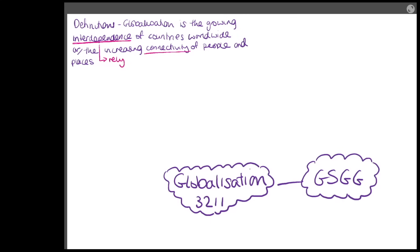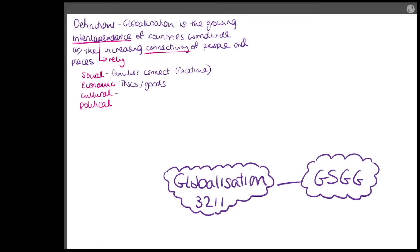When we think about globalisation, there are many strands: social, economic, cultural, and political. Social would be families connecting instantly, for example over FaceTime. Economic is our transnational corporations and goods being bought and shared from across the world. Cultural might be sharing of foods and cultural practices forming a global community. Political is when countries come together, for example with international agreements.